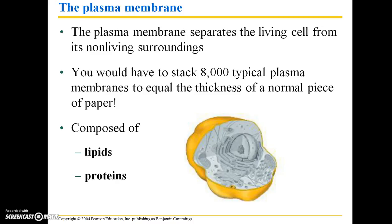The plasma membrane separates the living cell from its non-living surroundings. You would have to stack 8,000 typical plasma membranes to equal the thickness of a normal piece of paper. So if you carefully separated all of the plasma membranes from 8,000 individual cells and stacked those membranes on top of one another, that would just barely equal the thickness of a normal sheet of paper. It's mind-boggling the incredibly complex functions the membrane carries out, yet it's so incredibly thin.